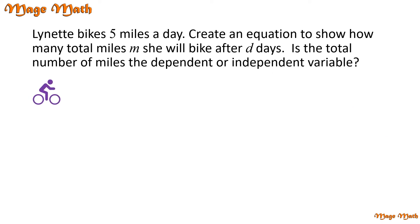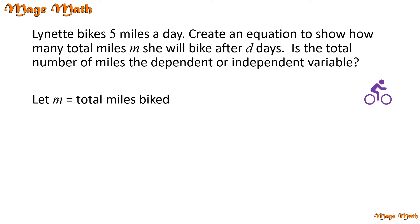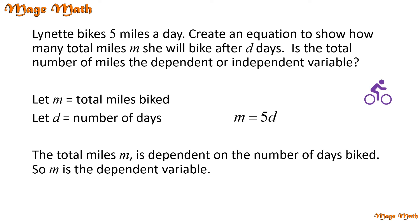Lynette bikes five miles a day. Create an equation to show how many total miles, m, she will bike after d days. Is the total number of miles the dependent or independent variable? Let's assign the variables. Let m equal the total miles biked and let d equal the number of days. Since we know Lynette bikes five miles each day, the total number of miles biked after d days can be expressed as m equals 5d. The total miles m is dependent on the number of days biked, so m is the dependent variable.